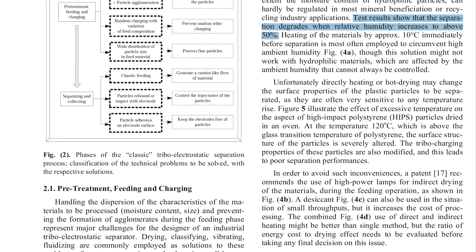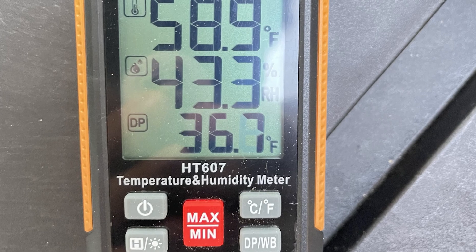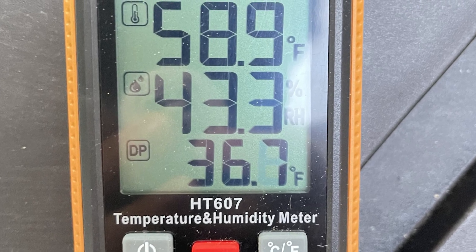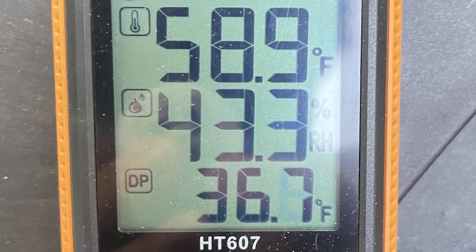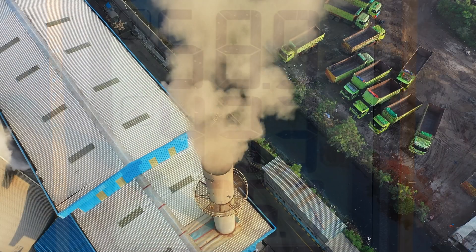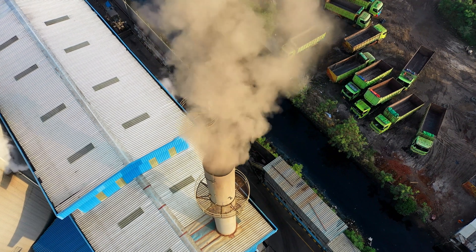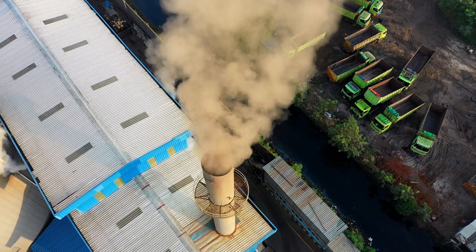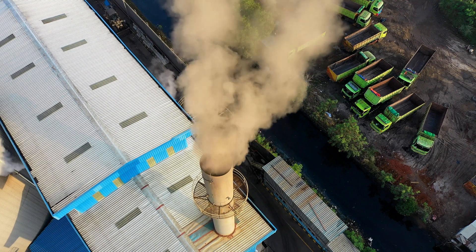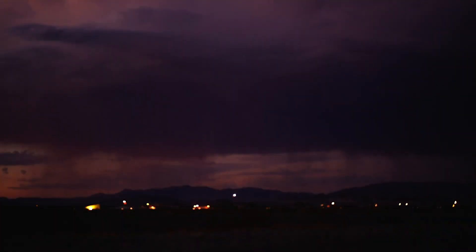According to research, the separation degrades when relative humidity increases to above 50%. The environmental humidity, which determines the moisture content of hydrophilic particles, can hardly be regulated in most mineral beneficiation or recycling industry applications. Hence, heating of the materials by approximately 10 degrees Celsius immediately before separation is most often employed to circumvent high ambient humidity, though this solution might not work with hydrophilic materials, which are affected by ambient humidity that cannot always be controlled.